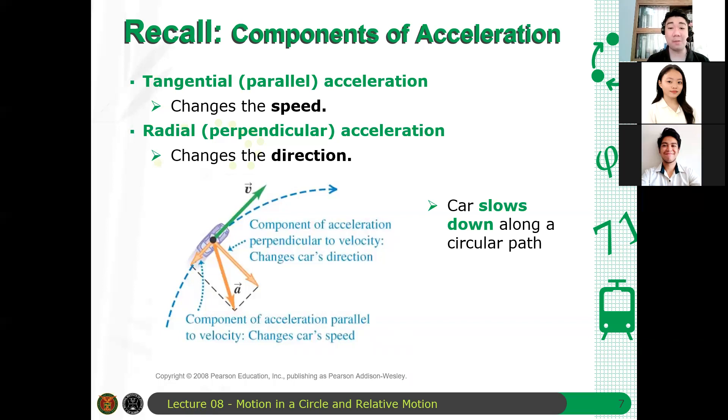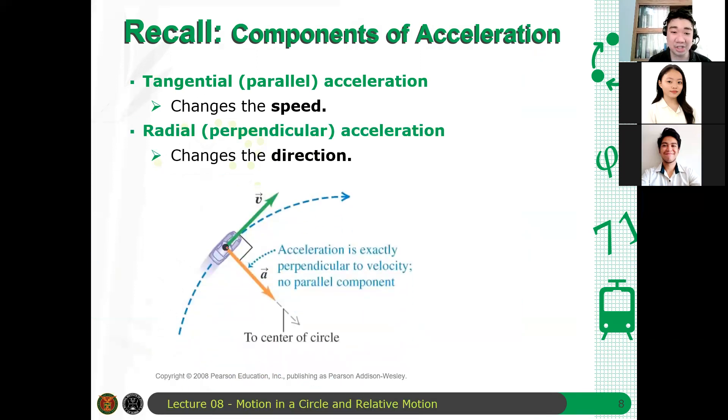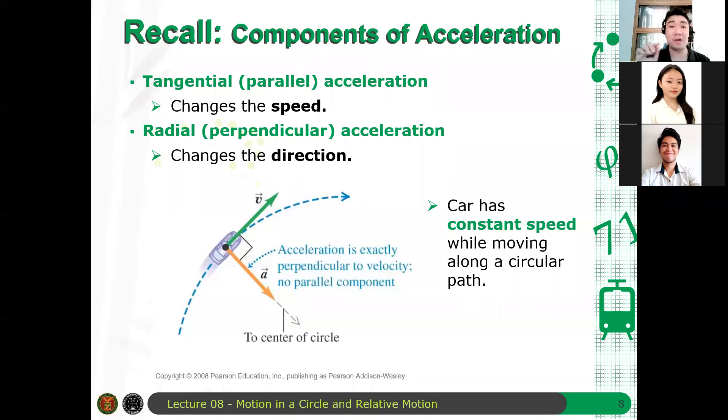Now, of course, paano pag ganito yung case. If exactly radial lang. If exactly radial lang, then there is no change in the speed of the particle. And therefore, the acceleration now is just center-seeking, and hence, centripetal yan. So, the car has constant speed, pero it changes its direction, therefore, it still has an acceleration. It changes its acceleration continuously. Questions? May tanong dito? None. Okay.